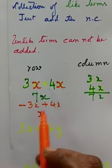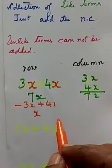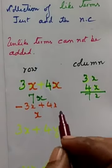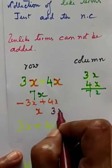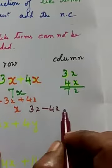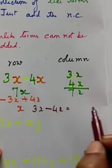If they have asked you to add 3x and minus 4x. Rule is the same. Subtract the smaller number by bigger number.